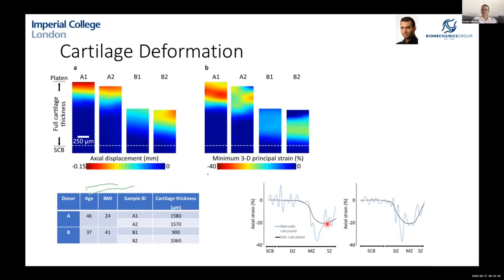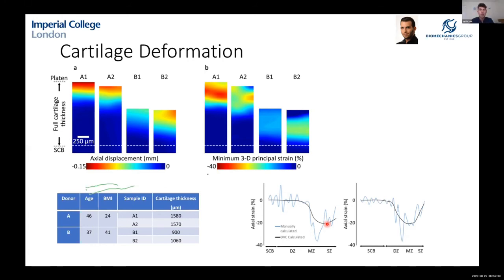Regarding computational time for determining volumetric strain on an osteochondral plug: typically maybe half an hour. If running many passes and iterations it can last overnight. At most I'd say probably an hour or two — so not too bad.